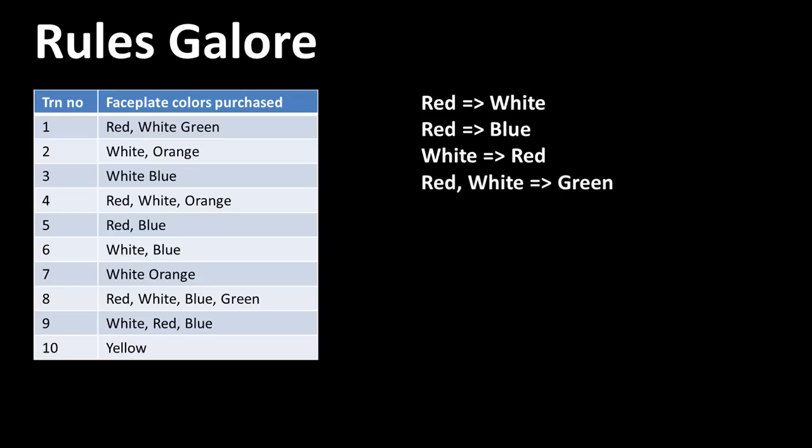So there are many rules that we can think of. You could even think of rules in which there are multiple items in the antecedent or multiple items in the consequent or both. So from the first row itself, we can identify a rule that says when red and white are purchased, green is also purchased. So association doesn't have to be between single items — it could be between sets of items.